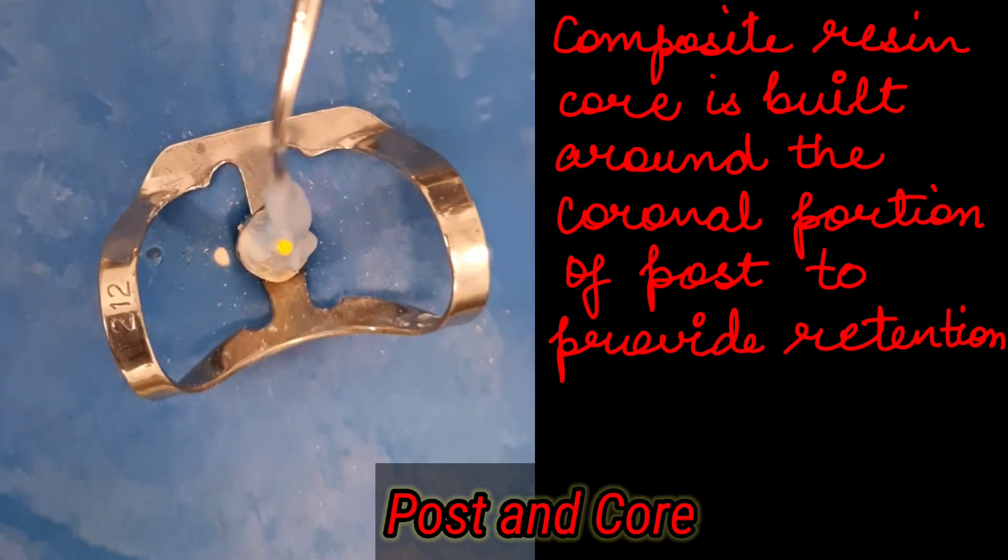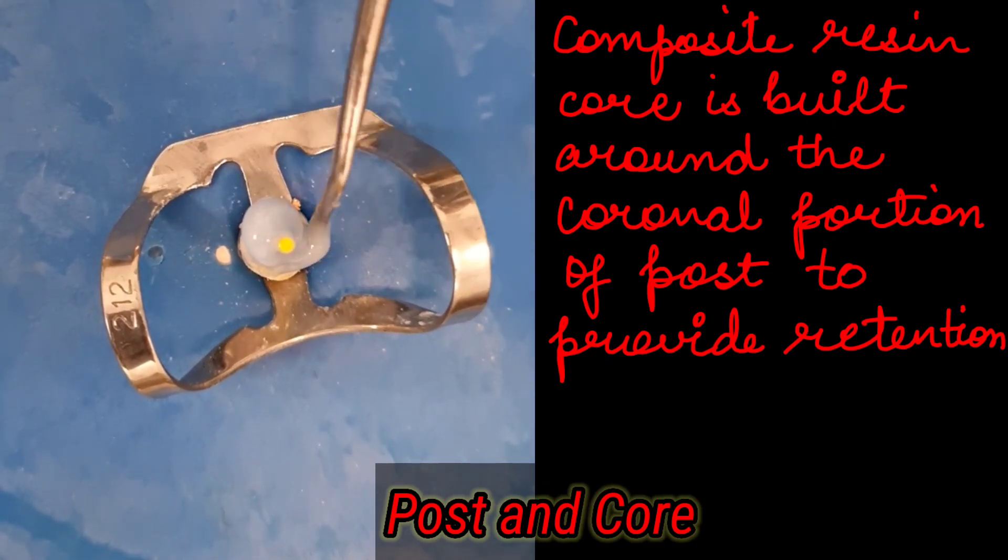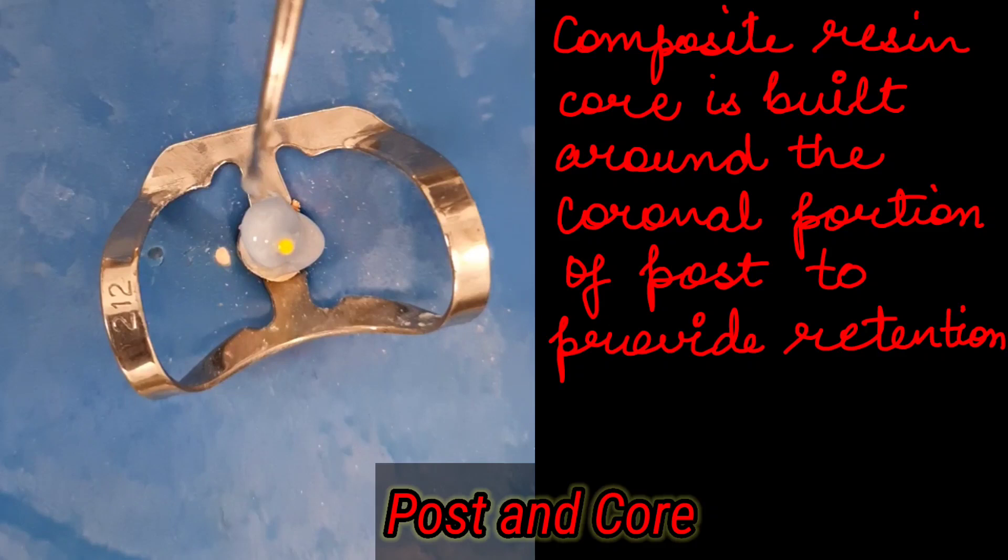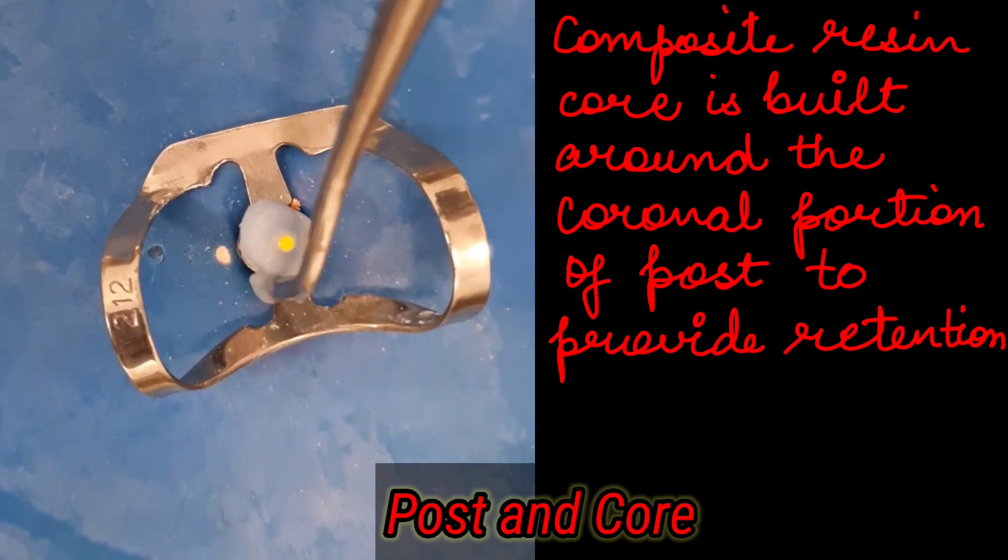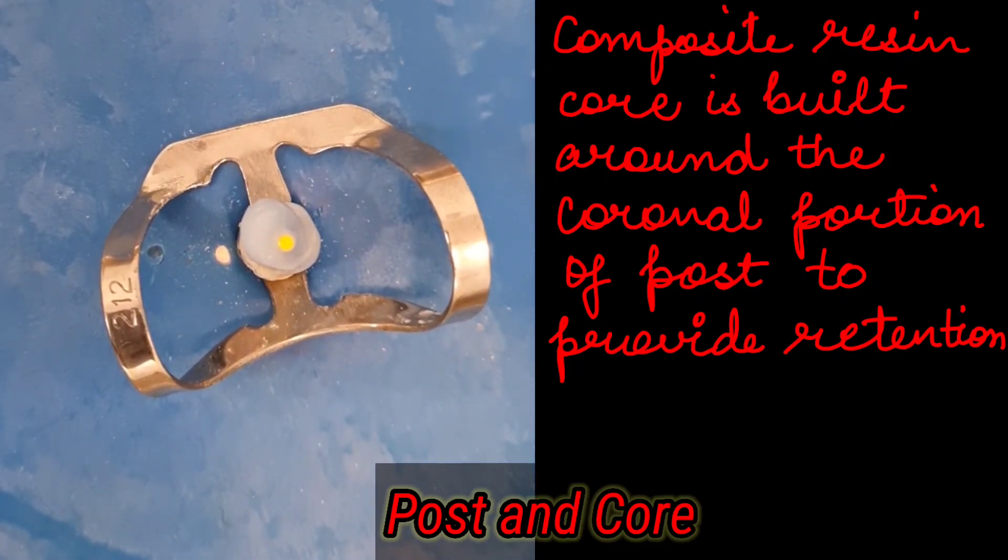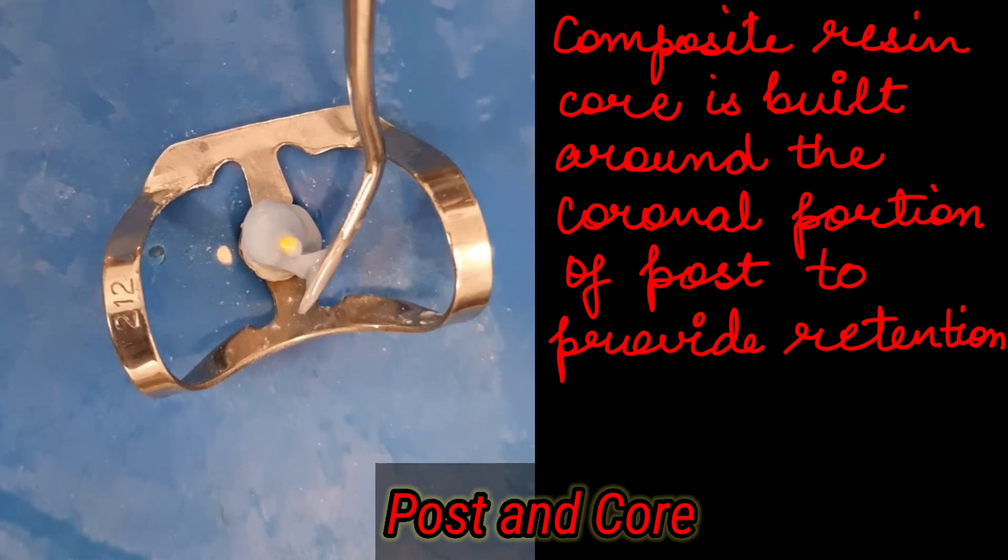We measure the working length and then we remove the gutta-percha up till two-thirds. In this video we have used a drill using a slow speed, but you can also reheat the gutta-percha—that means you can touch a heated instrument onto the gutta-percha to soften it up and then you can remove it, scrape it or scoop it using any hand tools. But you can also use a drill; it is a safer approach and it creates a good post space.